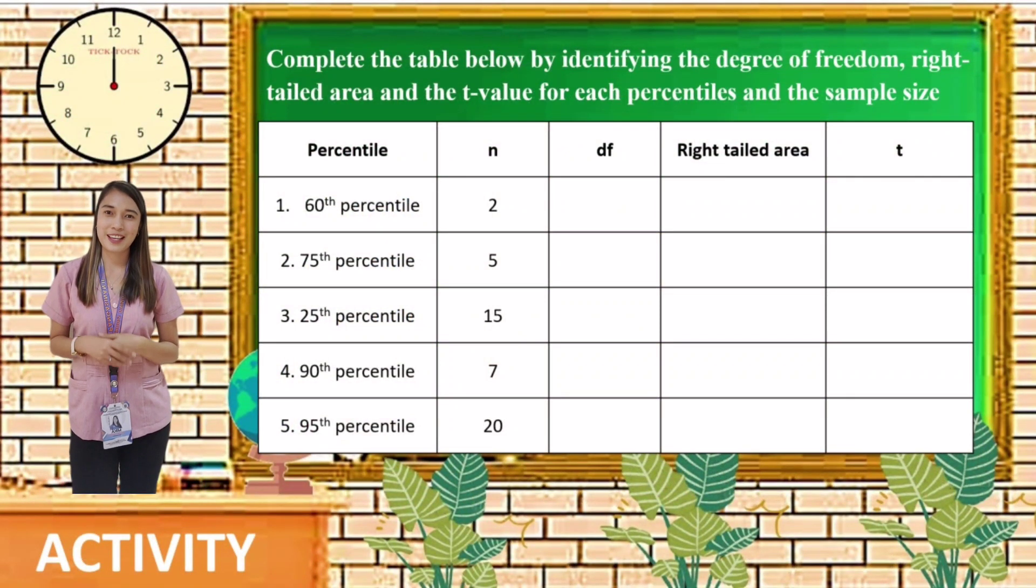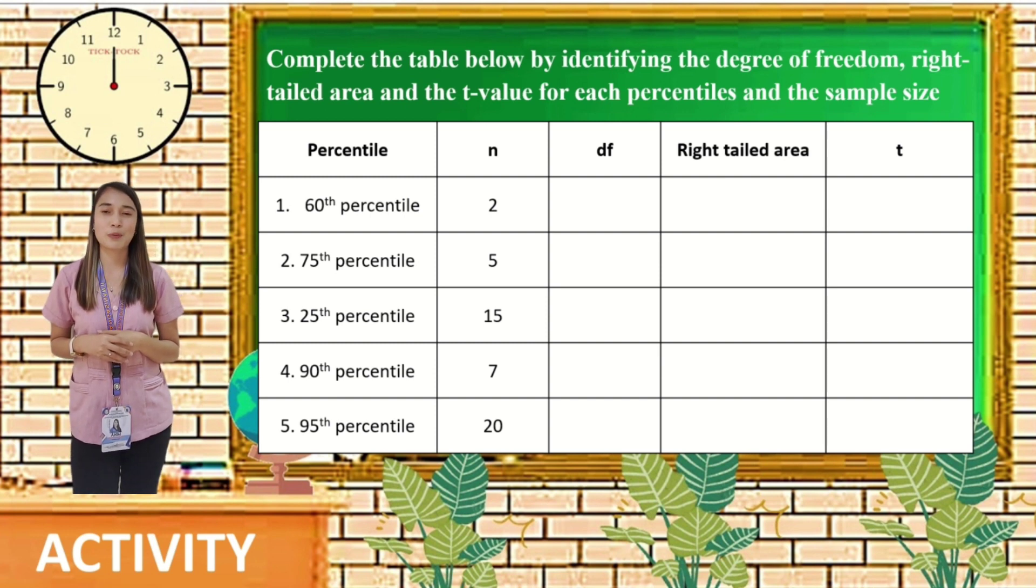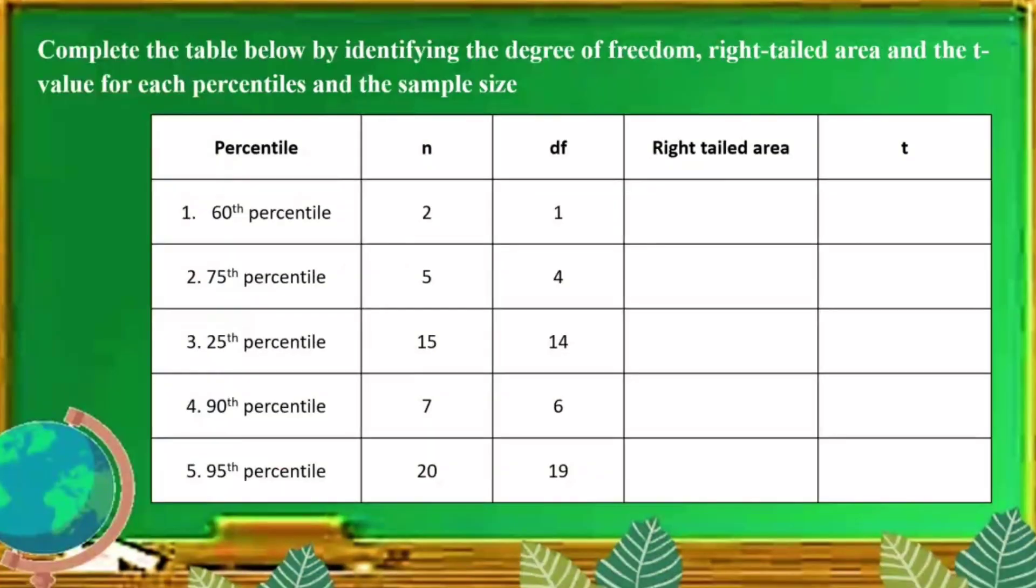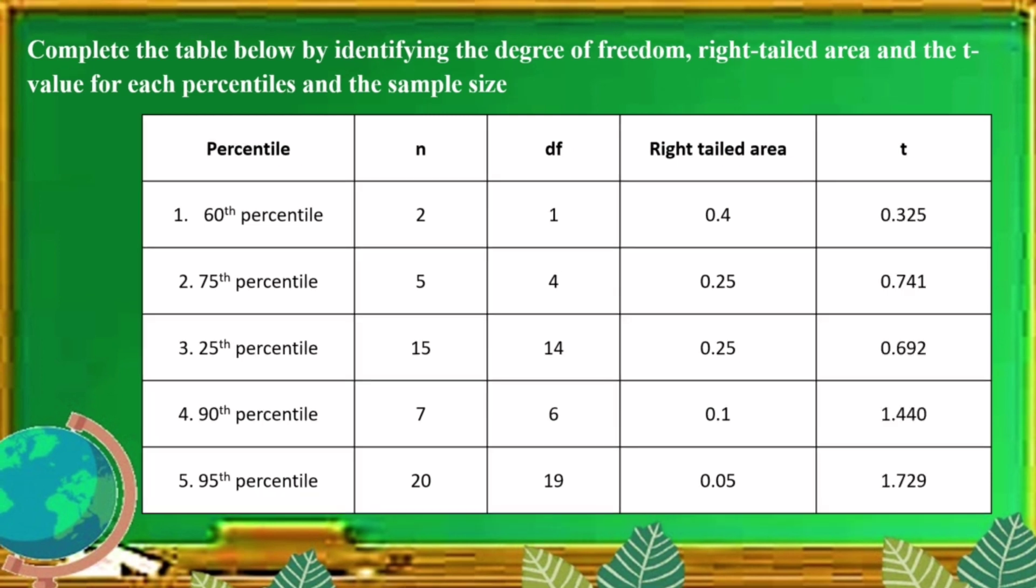We are done with our discussion for today. And now, you will have an activity. All you need to do is to complete the table by identifying the degree of freedom, right tail area, or T value for each percentile and sample size. I will give you 15 minutes to answer it. You may now begin. A few minutes later. Okay. Let's check your answer. For degrees of freedom, this is the answer. For right-tailed area, this is the answer. For the T value, this is the answer.